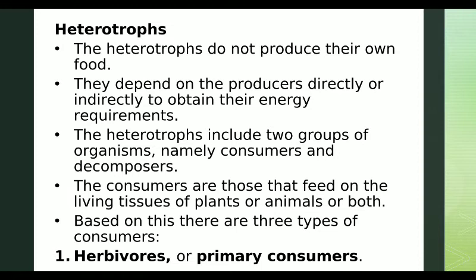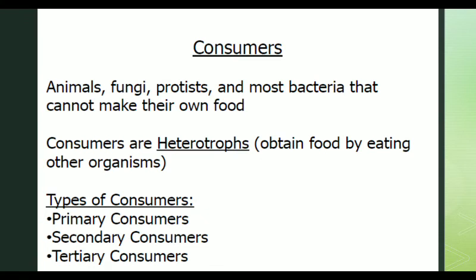Heterotrophs do not produce their own food; they depend on producers directly or indirectly. Consumers are classified as primary consumers, secondary consumers, and tertiary consumers.